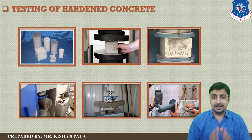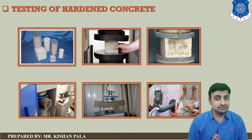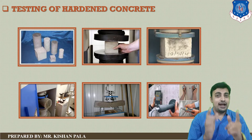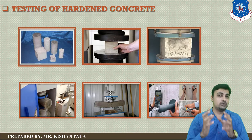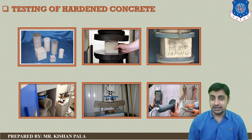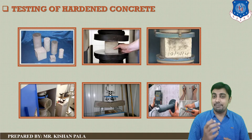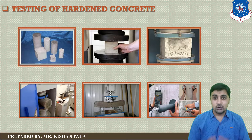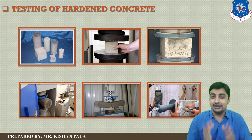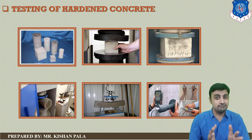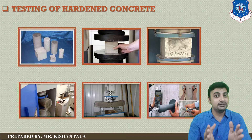The hardened properties are mainly considered as the strength of the concrete mass. These properties you have to identify before using the concrete mass at your site. You have to assure that your concrete mass is capable of giving the desired strength at your site, so you have to identify the hardened properties and the strength of the concrete mass.